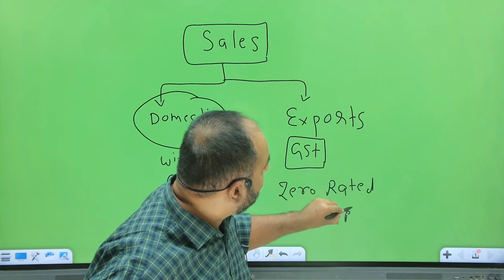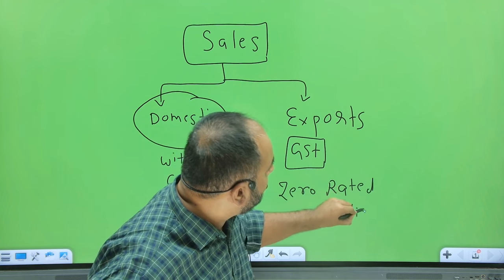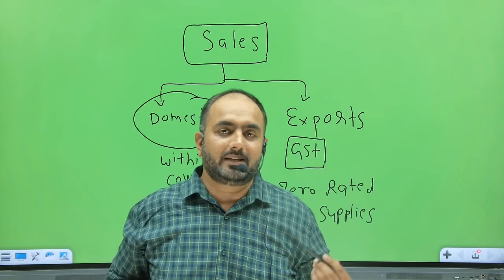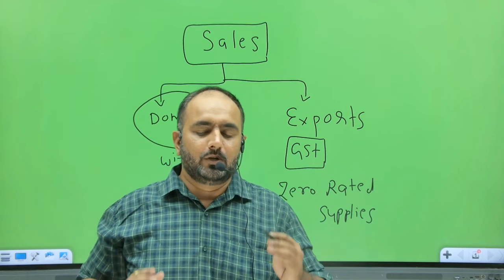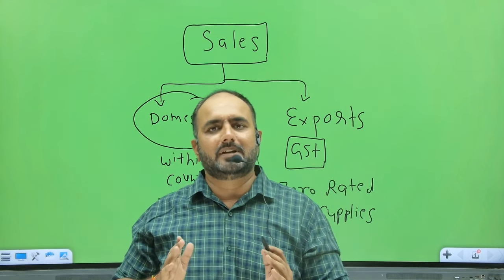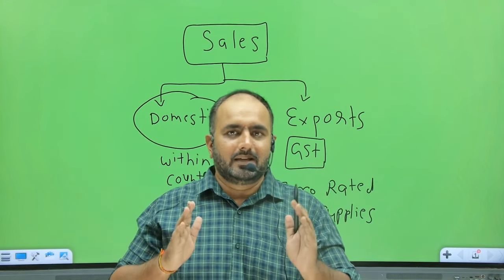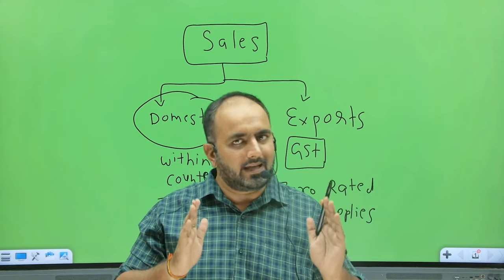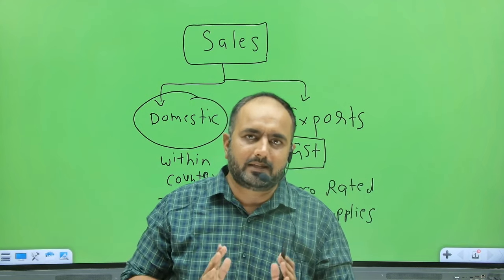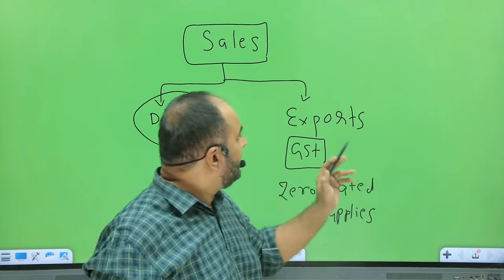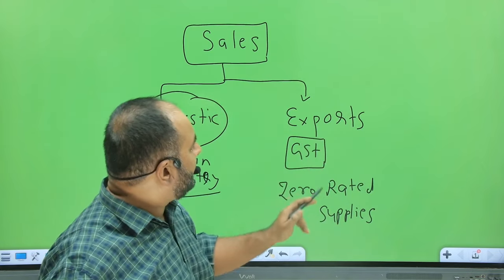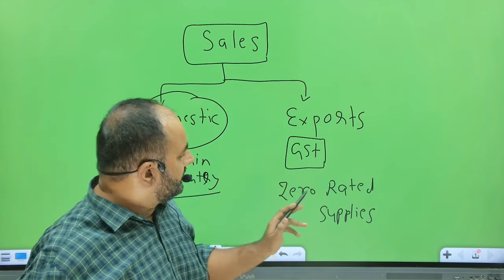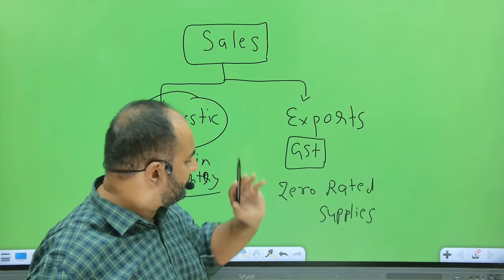Now you might ask — there is also nil rated supplies, zero rated supplies, exempted supplies. We will discuss each type of supply in separate videos. But as far as this video is concerned, we will discuss that exports are called zero-rated supplies. Zero rated supplies are known as exports.